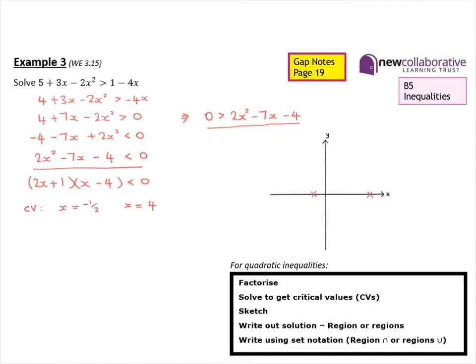We can now sketch the graph with critical values −½ and 4. Since we are looking for 2X² − 7X − 4 < 0, we want the part of the graph below the X-axis. That gives the solution set X is between −½ and 4, which in inequality notation is −½ < X < 4, and in interval notation is (−½, 4).